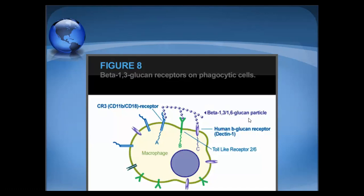Beta-1,3 or beta-1,6 glucan particles bind to Toll-like receptors, which are transmembrane proteins — embedded in the cell membrane. These Toll-like receptors are protein molecules that induce and activate particular cells to neutralize pathogens or induce phagocytic capacity of phagocytic cells.